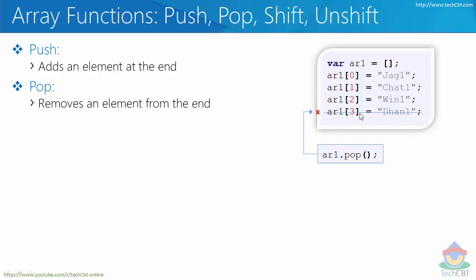Pop removes the last index of that particular array along with its value from memory. Pop always removes the element from the end, so only the last element will be removed and none of the others will be shifted or touched.